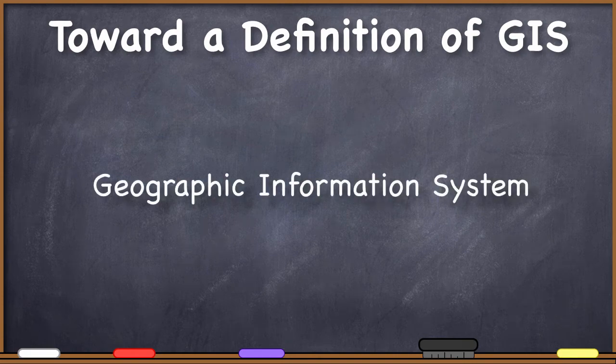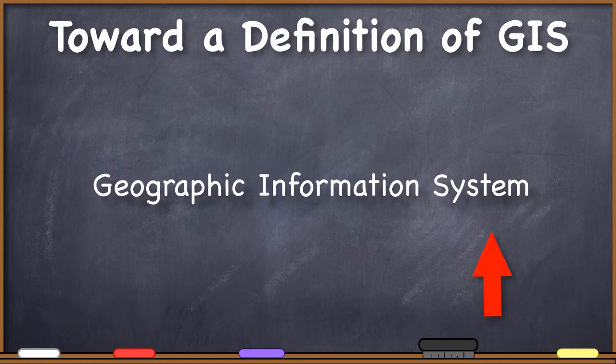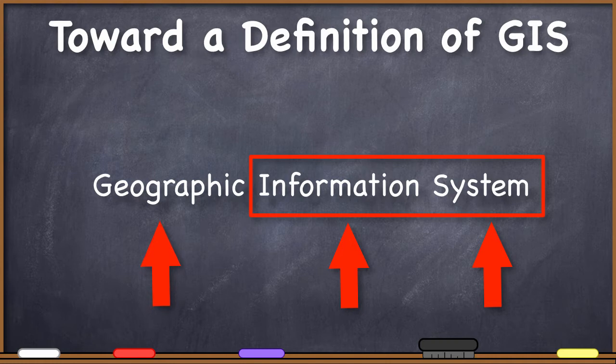First, I'm going to specify what it means for something to be a system, and then what information is so we know what it means to be an information system, and then we will talk about what it means for something to be geographic so we can put it all together into geographic information system.